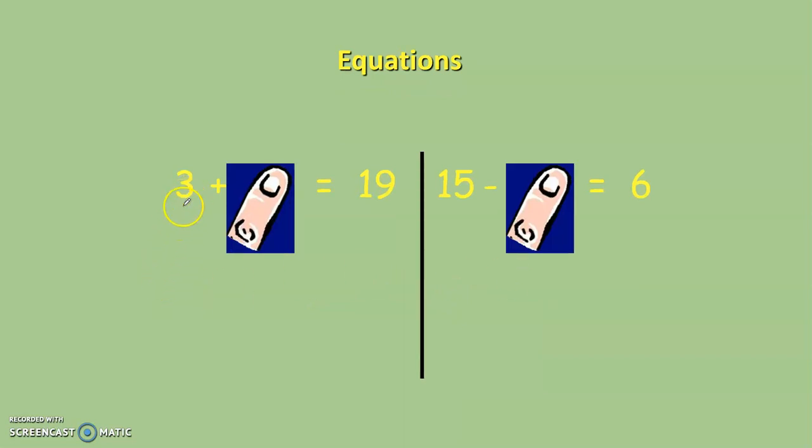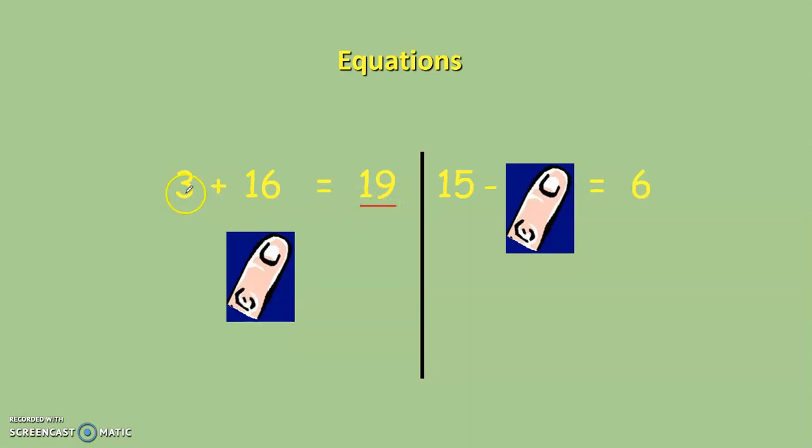Second example, three plus what is equal to 19? What am I covering up here with the finger? What do I add to the number three to give me 19? 16 should be the correct answer. Again, the sides are balanced out here. I have 19 and here I also have 19.